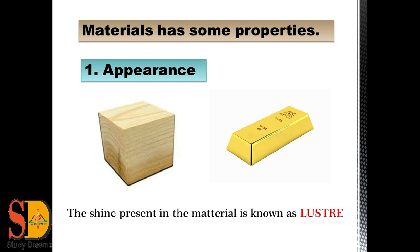Let's discuss the properties in detail. The first property is appearance — appearance means how a material looks. Based on appearance, materials are of two types: shiny and dull. Materials like wood or plastic are very dull and non-shiny in appearance, whereas metals like gold, silver, diamond, and iron are very shining materials. You can see in this picture the wood piece appears very dull while the gold biscuit looks very shiny.